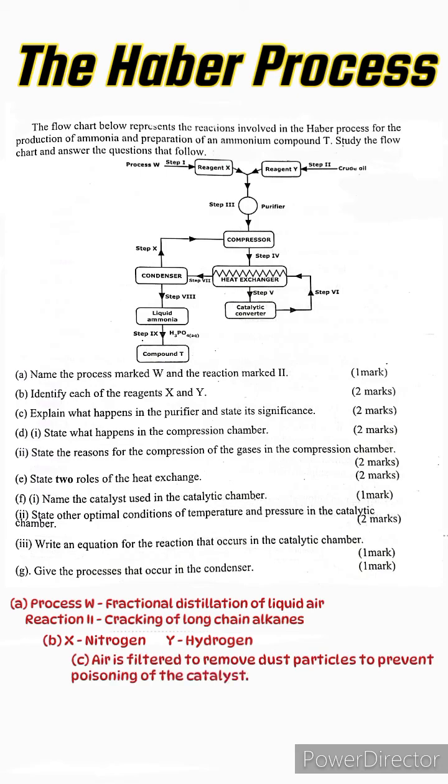Part d, roman one: State what happens in the compression chamber. In the compression chamber, the mixture of gases—that of nitrogen and hydrogen gases—are compressed to very high pressures of around 200 atmospheres.